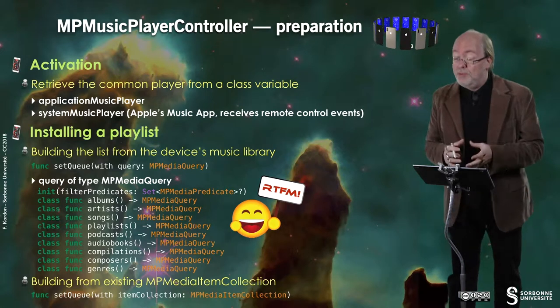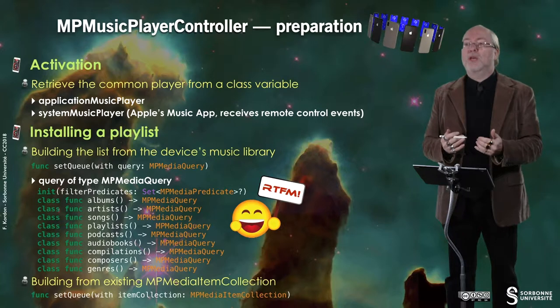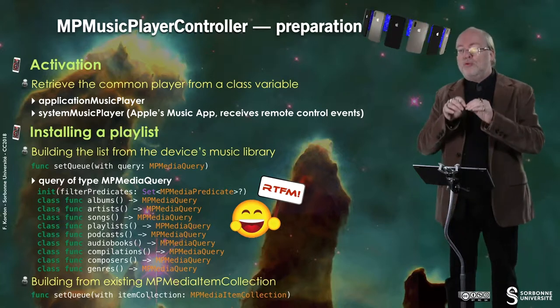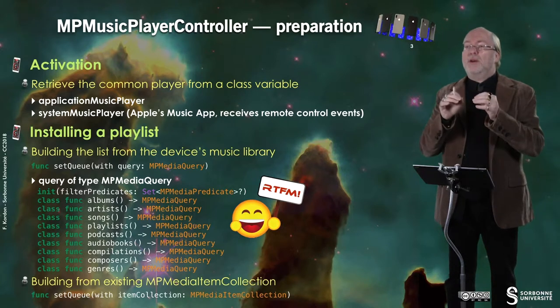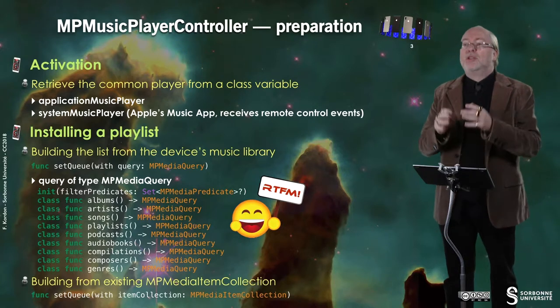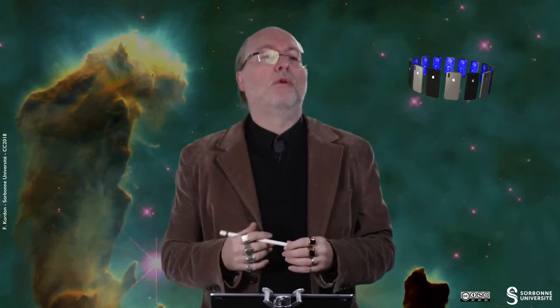The difference between both is that with the System Music Player, you play your track within the Apple Music App, so you receive remote control events and you are sure that everything is handled. Otherwise, with the Application Music Player, you have to handle it yourself. That's apparently the main difference between the two; otherwise, they work similarly.